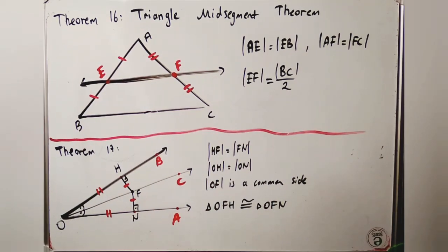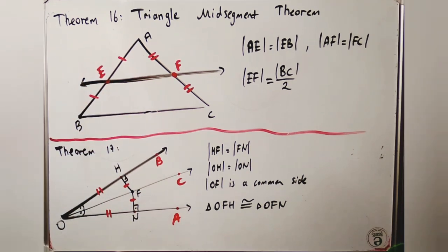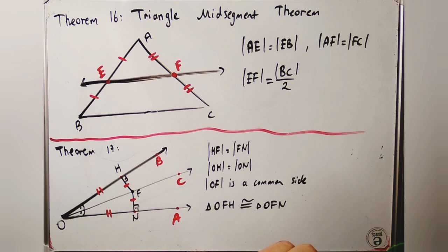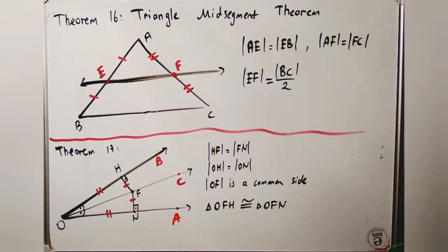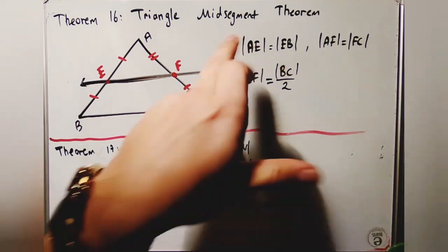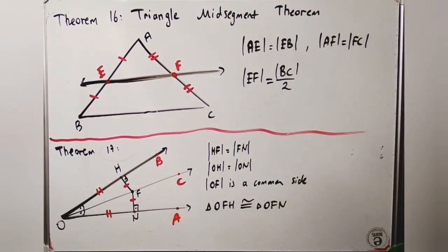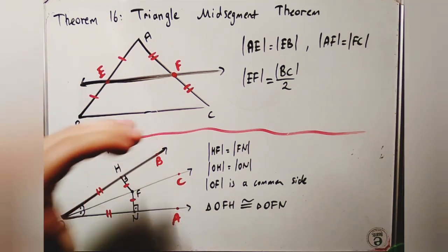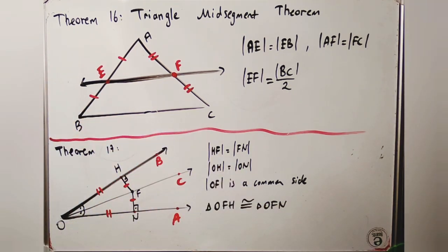Theorem 16 is the triangle midsegment theorem. In triangle ABC, points E and F are midpoints of segments AB and AC respectively, so AE = EB and AF = FC. The length of the midsegment EF is half of BC.